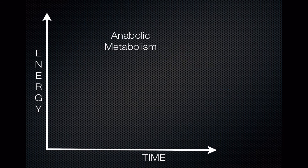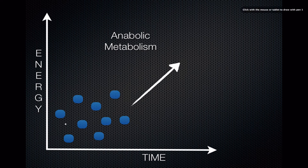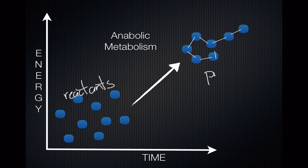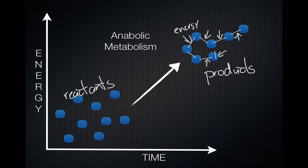Anabolic pathways go just the opposite. We're going to start out with some reactants that are lower in energy, so they're lower down on the graph. As we proceed through the anabolic reaction over time, we're going to go uphill and build a product or products made up of joining these pieces together with bonds. The energy is going to be stored in these chemical bonds — covalent bonds, polar covalent bonds — but that's where the energy is existing, so to speak.